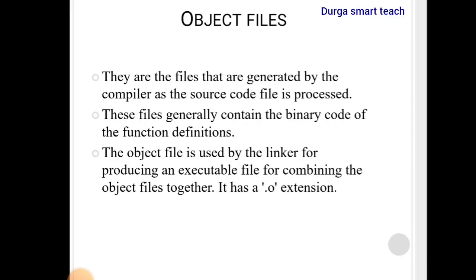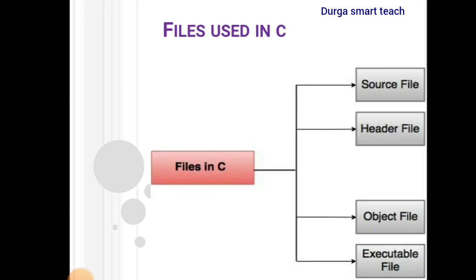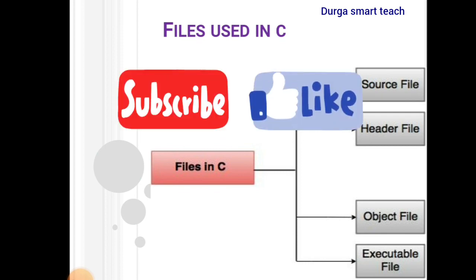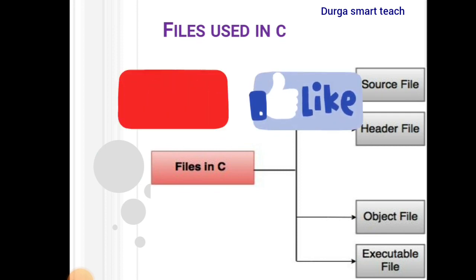So there are four types of files: source file, header file, object file, and executable file. If you have any doubts, please comment in the comment section. For more videos, please subscribe to my channel. Thank you.